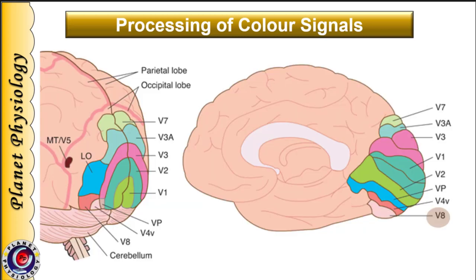This picture shows various areas in the visual cortex. V1 is the primary visual cortex. Surrounding it is V2, the secondary visual cortex or area 18, with other areas labeled up to V8. Area V8 is specifically concerned with color signal processing.